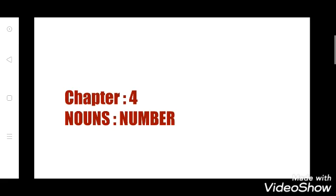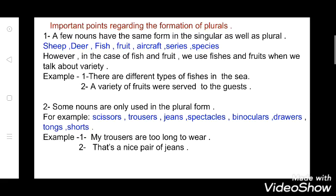Chapter 4: Nouns Number. Here are important points regarding the formation of plural. See the first point: a few nouns have the same form in the singular as well as plural. So there are few nouns which are same in form of singular also and they are same in form of plural also. So the words are: sheep, deer, fish, fruit, aircraft, series, species.